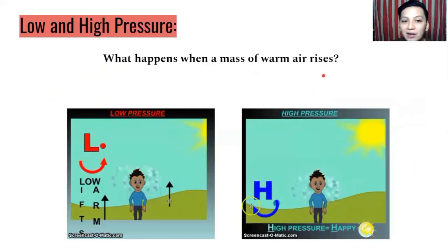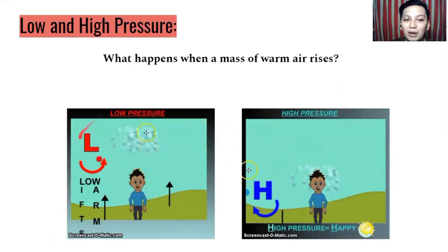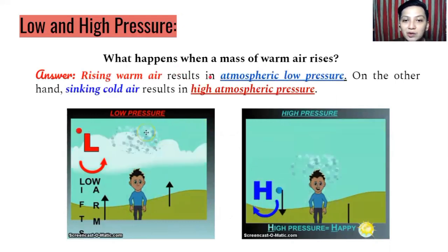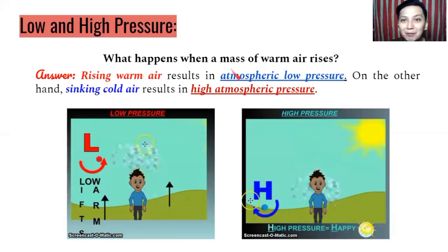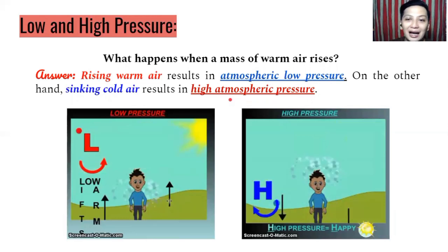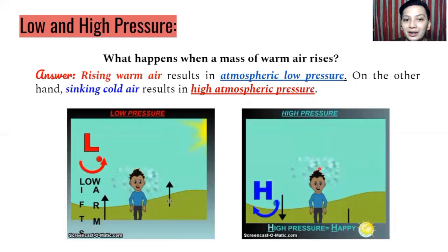What happens when a mass of warm air rises? Looking at warm air and cold air, rising warm air results in atmospheric low pressure. On the other hand, sinking cold air results in high atmospheric pressure. You may be familiar with LPA — low pressure area — and HPA — high pressure area. So when warm air goes upward it results in low pressure, but when there is cold air it results in high pressure.